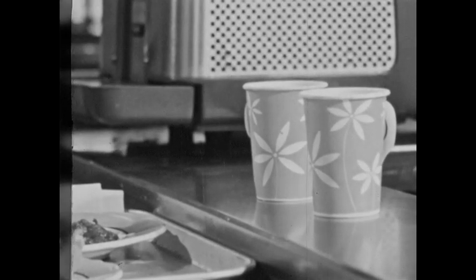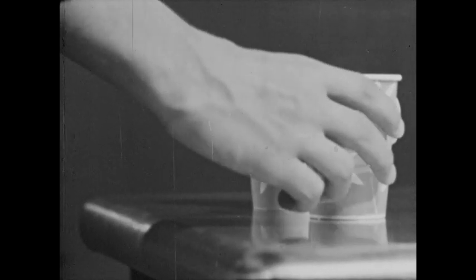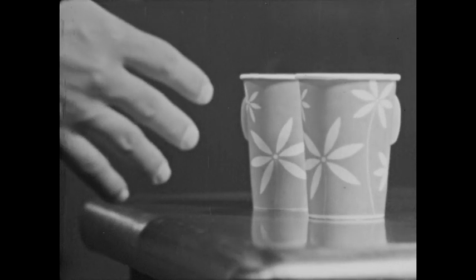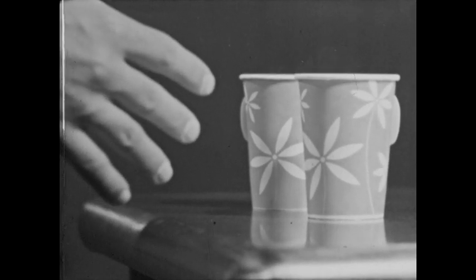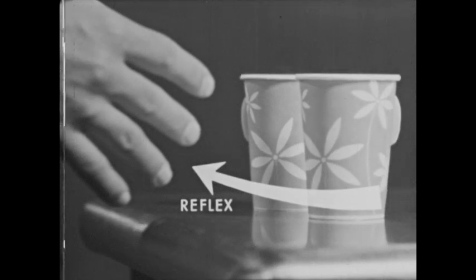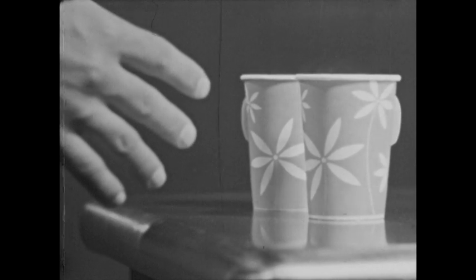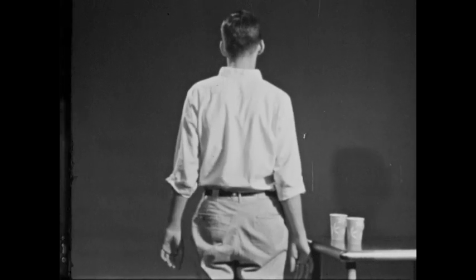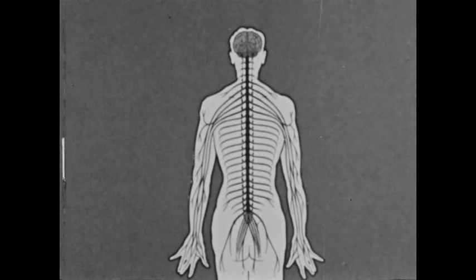Have you ever touched a hot cup? Let's watch that in slow motion. Such an action — immediately pulling your hand away from a hot surface — is called a reflex. It is the simplest action of the nervous system. What caused the reflex? Knowing the functions and parts of the nervous system will give us the answer.